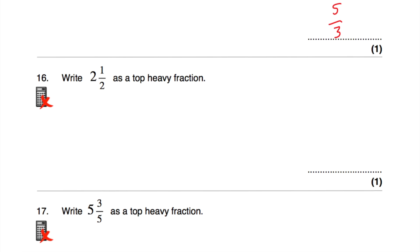Question number 16: write 2 and a half as a top-heavy fraction. We're going to take our 2, times it by the 2 on the denominator — 2 times 2 is 4 — and add on another 1, which gives 5. So it's going to be 5 halves. In terms of halves, in 2 wholes you'd have 4 halves, and another half would be 5 halves.